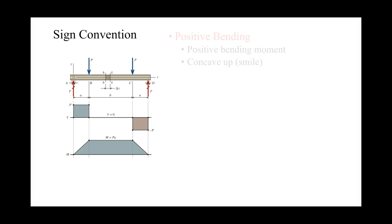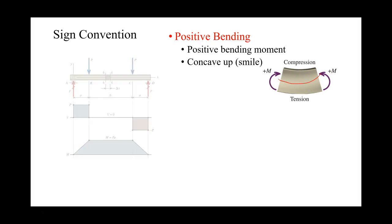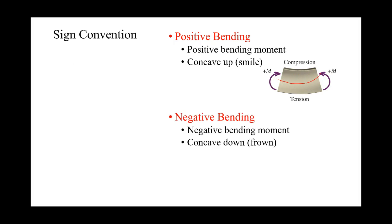The sign convention we'll use for beams in bending has positive bending when we have a concave up shape, or a smile. Here we see a positive bending moment with the smile shape. Negative bending has a concave down shape, such as a frown.